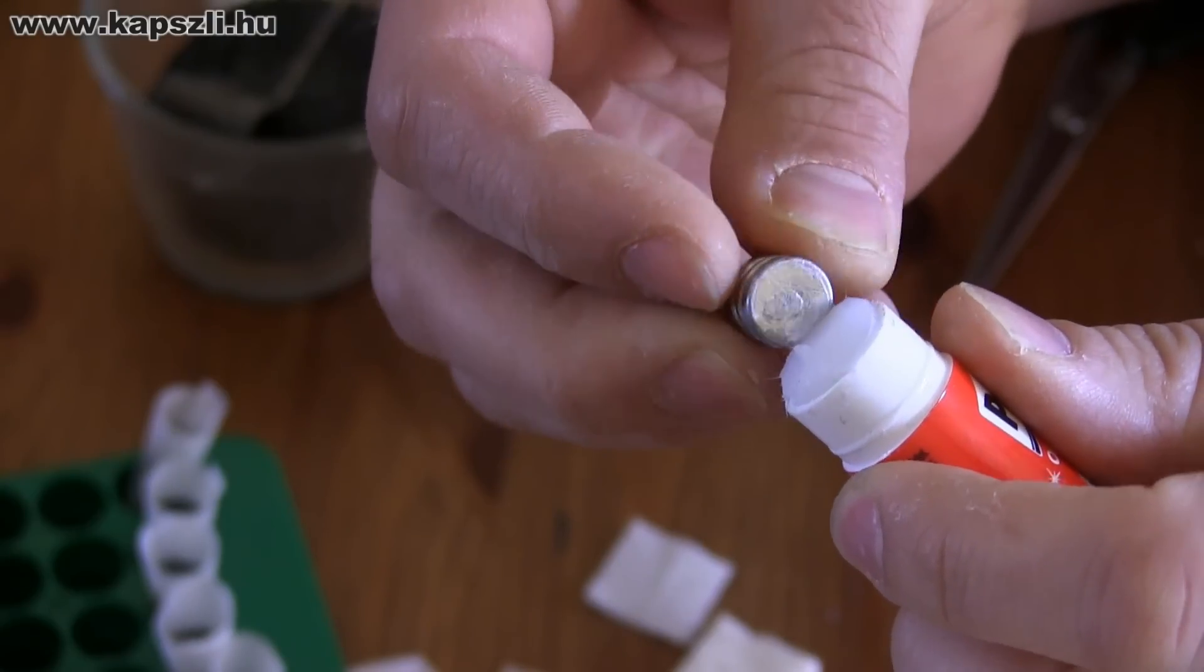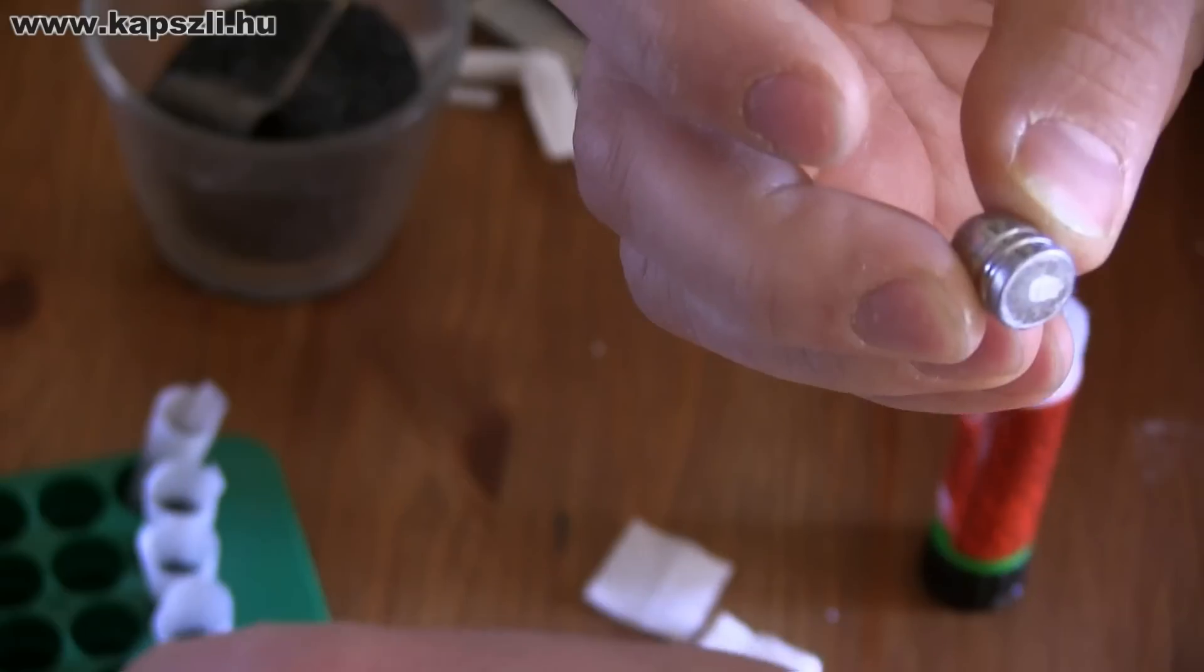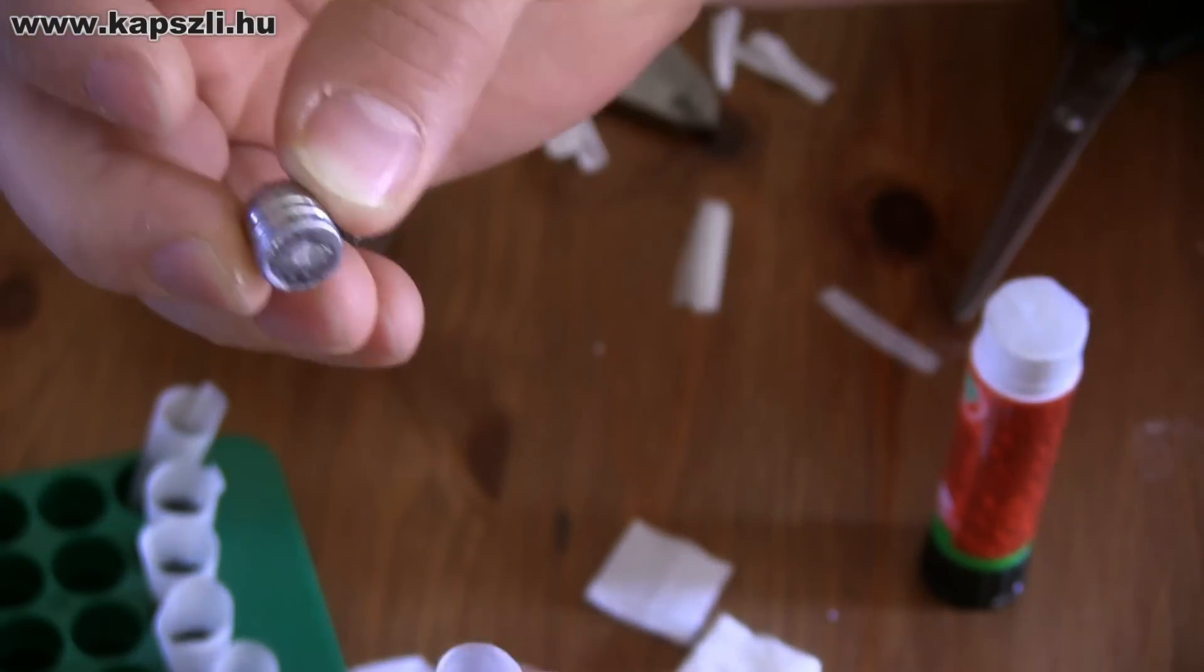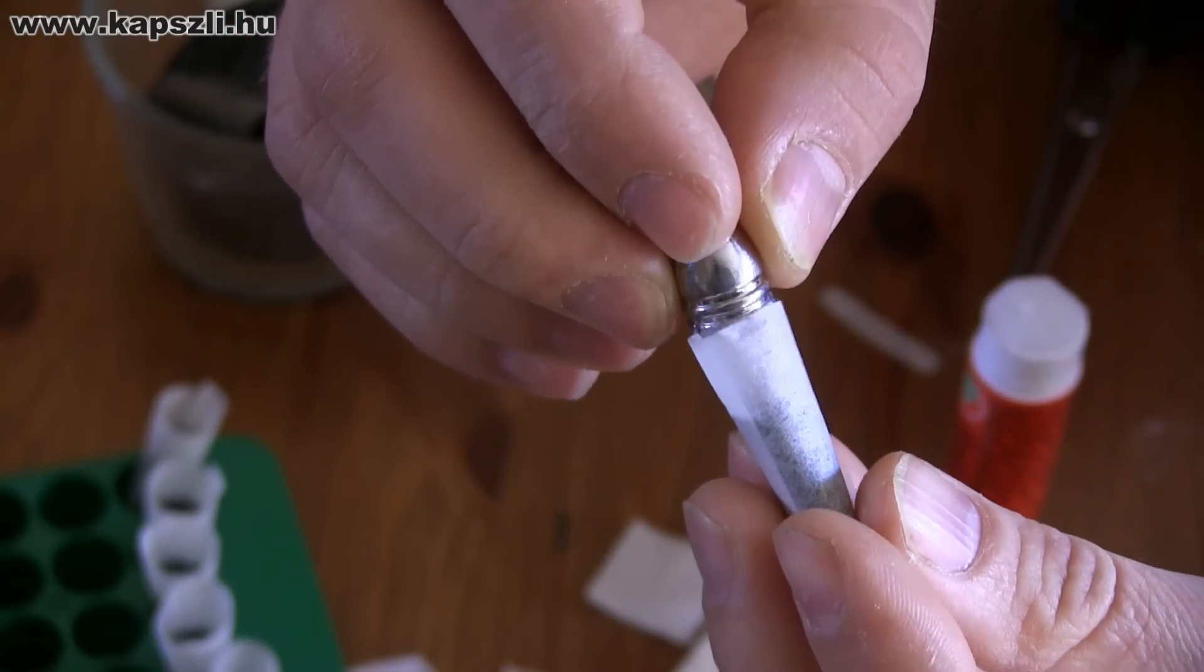Now it is time to insert the ball, but before doing so, apply some glue on the bottom edge of the bullet. The trombone-like end of the case will accept the bullet easily. You can carefully slide it in place.